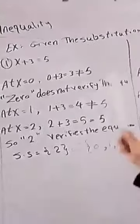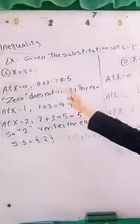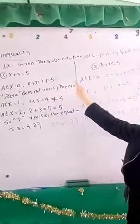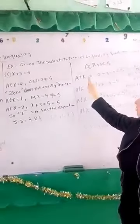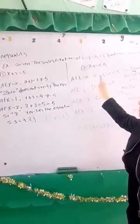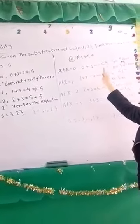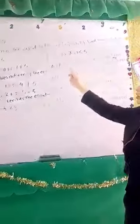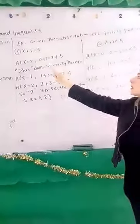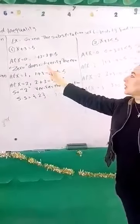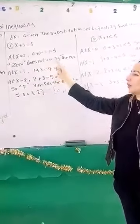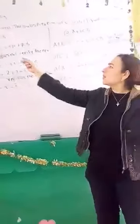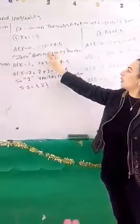Now, the example uses the substitution method. We will substitute values 0, 1, and 2 to find the solution of x plus 3 equals 5. The first substitution: x plus 3 equals 5.